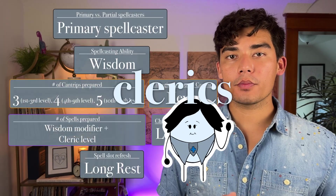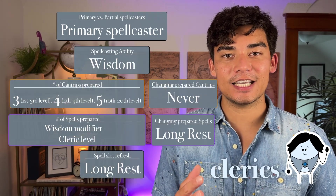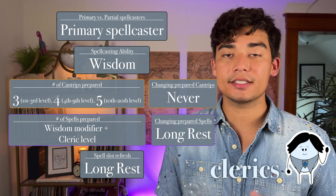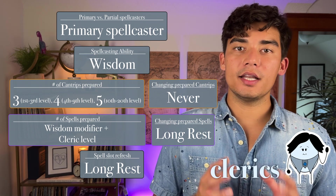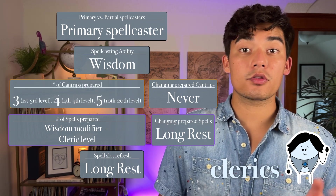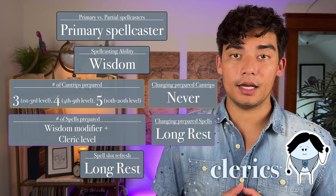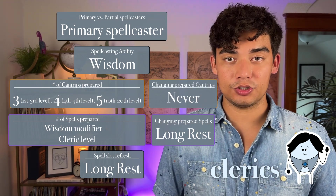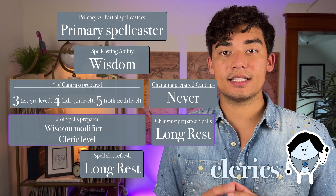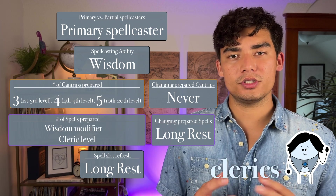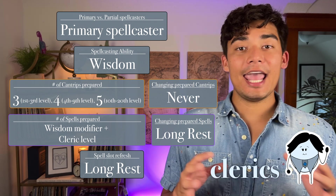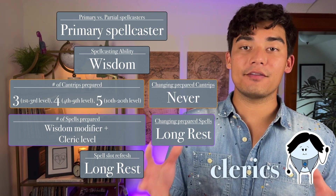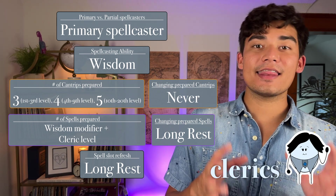Clerics are primary spellcasters, meaning they get access to level 1 through 9 spell slots as they level up. Their spellcasting ability is wisdom. The number of cantrips they can prepare increases from 3 to 5 as they level up, and they cannot change their prepared list of cantrips. The number of spells they can prepare is their wisdom modifier plus their level in cleric. They can change their prepared spell list after every long rest, and spell slots refresh after a long rest.